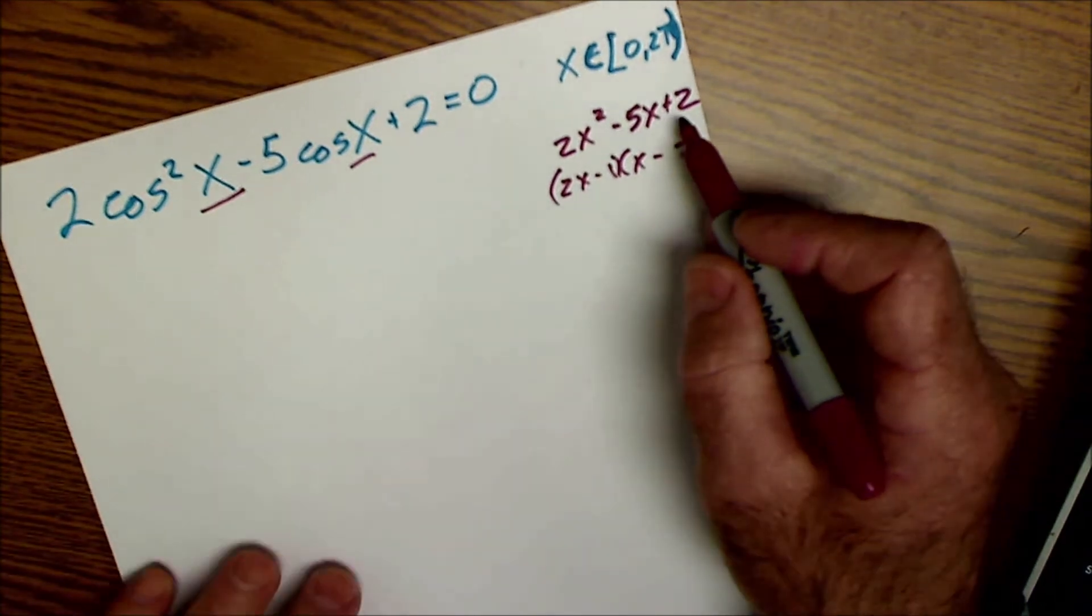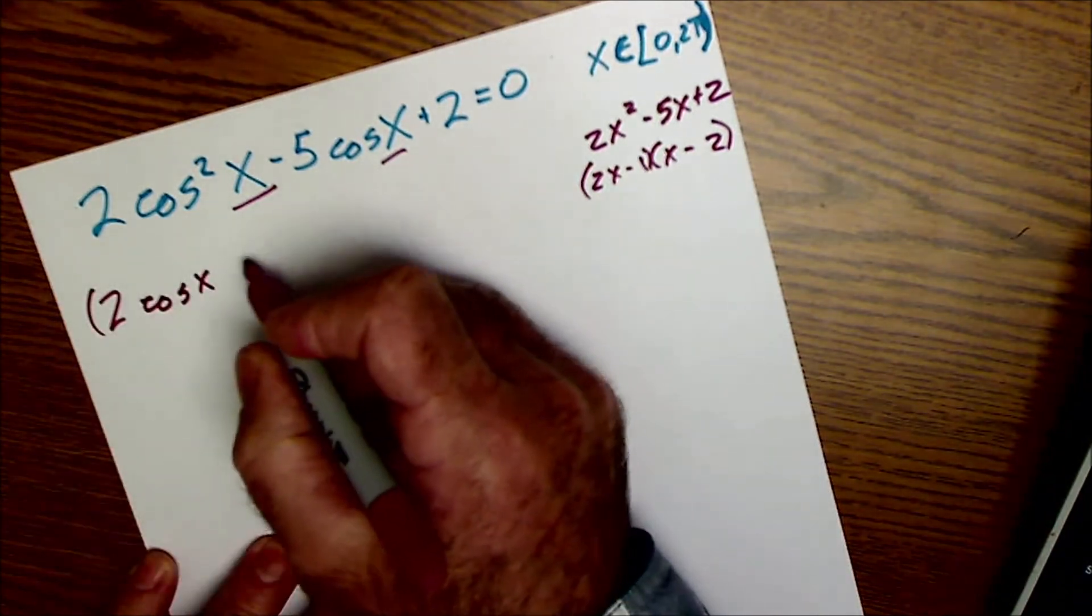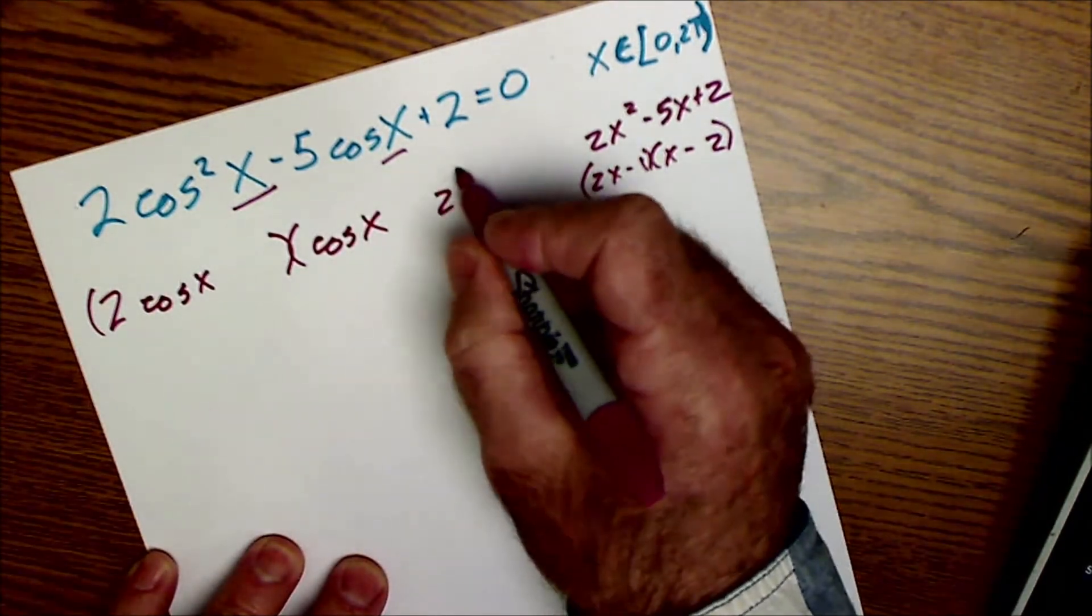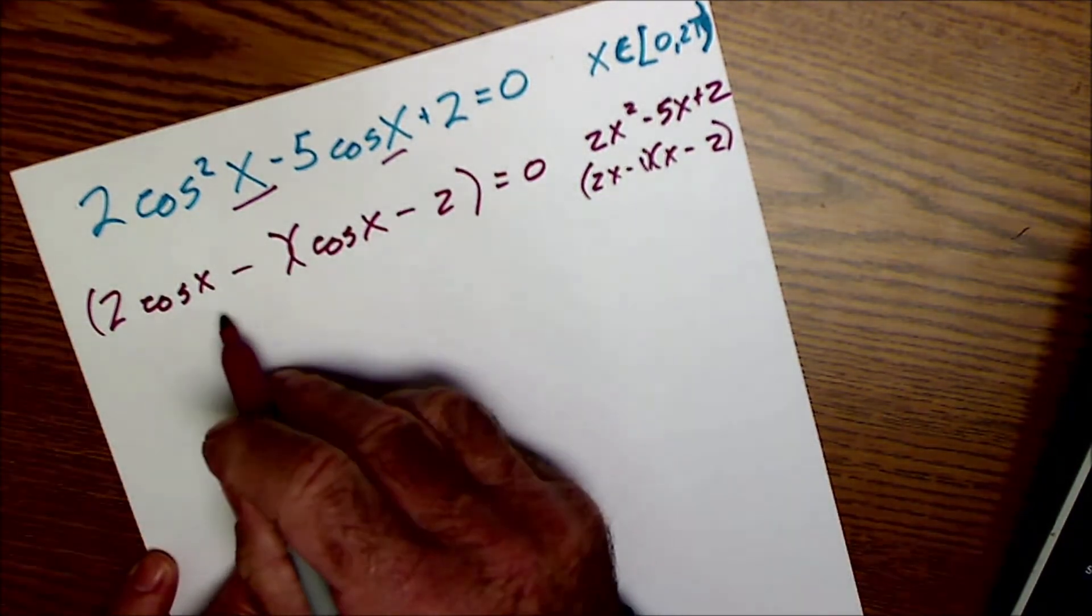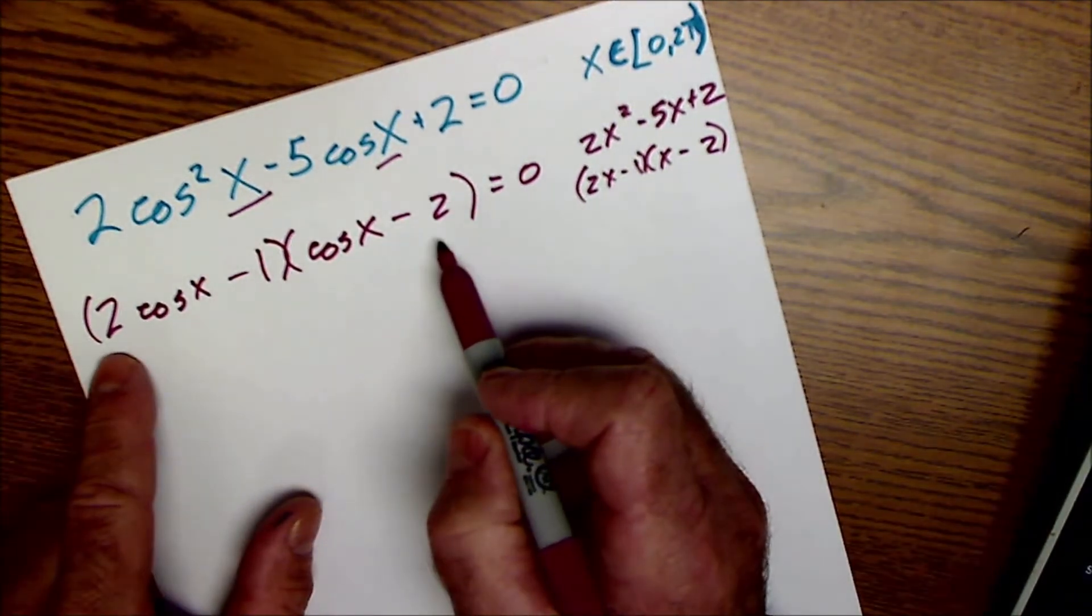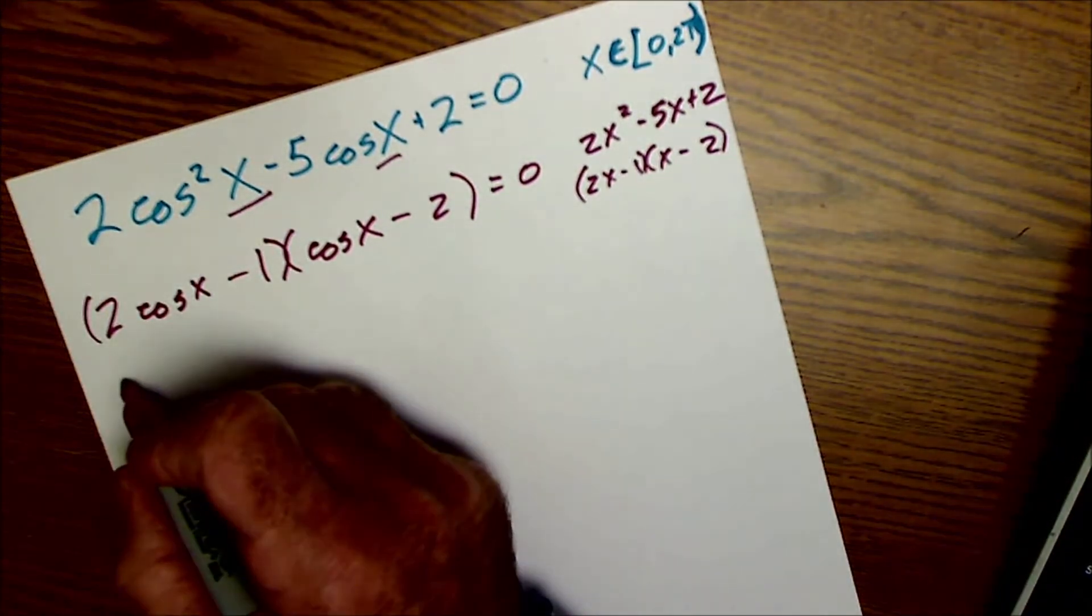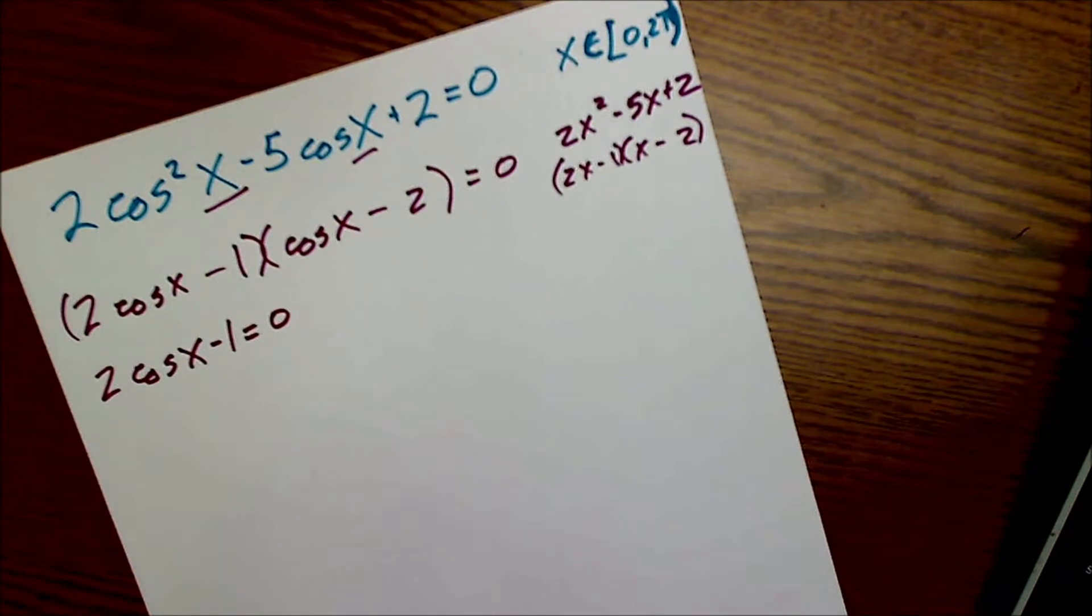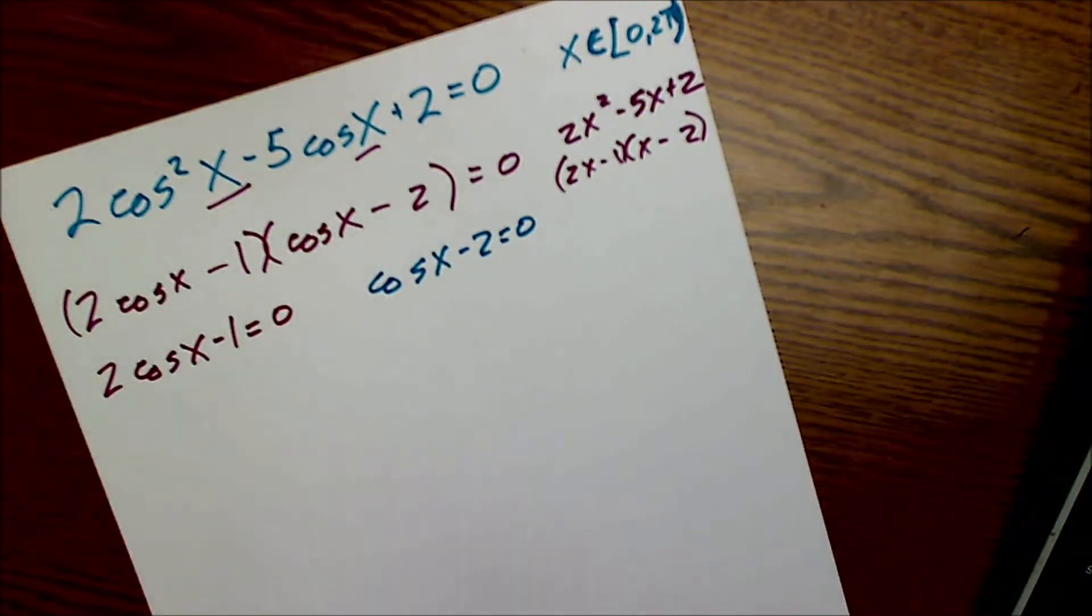So just like I factored this in algebra, I'm going to factor it using the trig function cosine, giving me 2 cosine of x. And cosine of x, a 2 is equal to 0. These are both negative. Whoops, negative 1. Double check, 2 cosine squared of x minus cosine minus 4 cosine gives me my negative 5 cosine plus 2. So that means either 2 cosine of x minus 1 has to be equal to 0, or cosine of x minus 2 has to be equal to 0, 0 sum property.